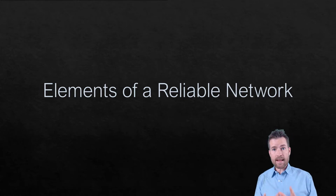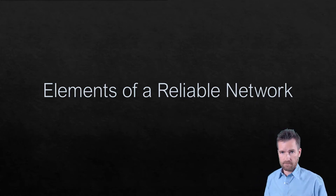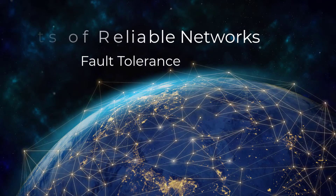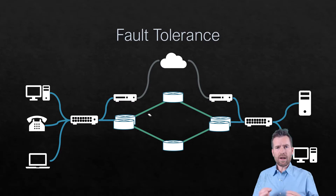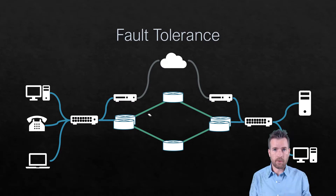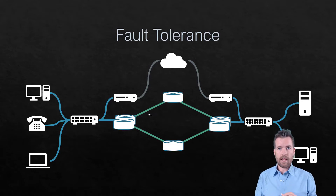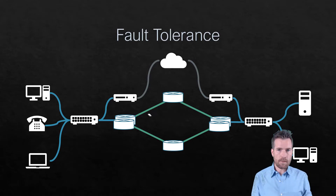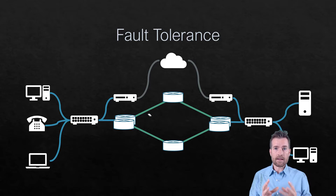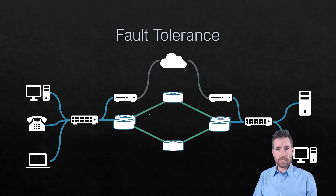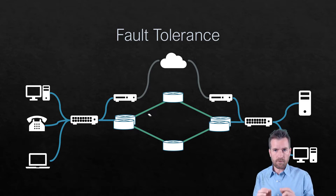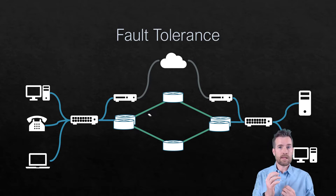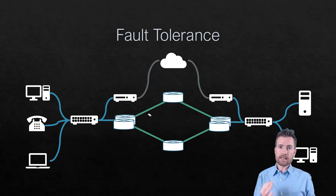Let's talk about different elements that make a network reliable. One of the things we want out of our networks is fault tolerance. We want our networks to be fault tolerant — at any given time, pieces of equipment can fail, lines can fail. If your network connection goes down, that could be lost business. So we want systems in place that, if systems break down or pathways fail, traffic will be rerouted to different equipment and networking will continue. This is fault tolerance.